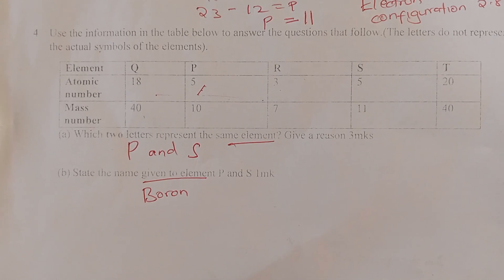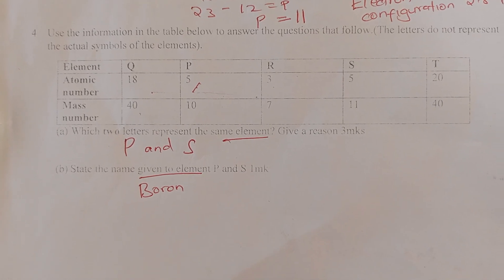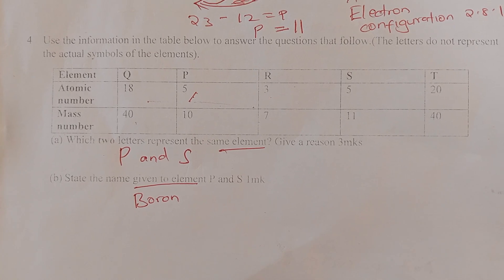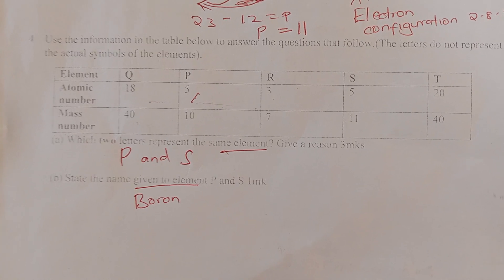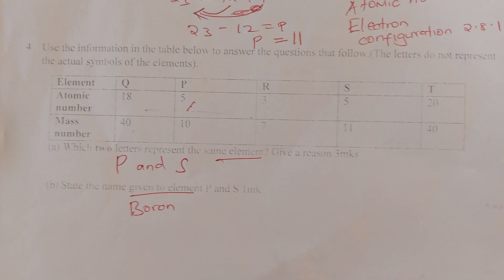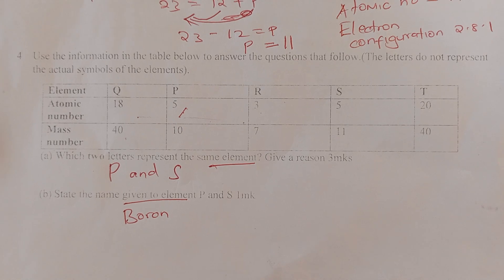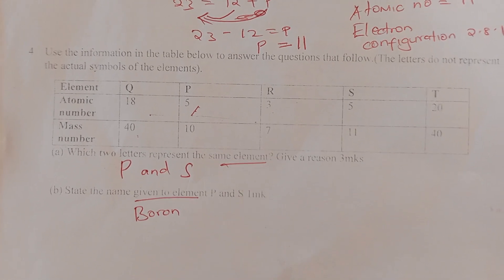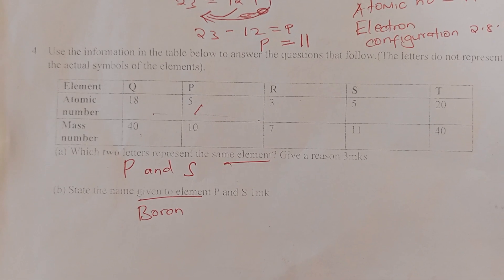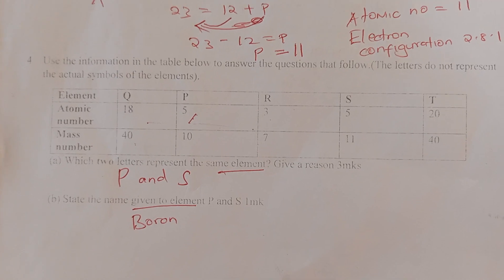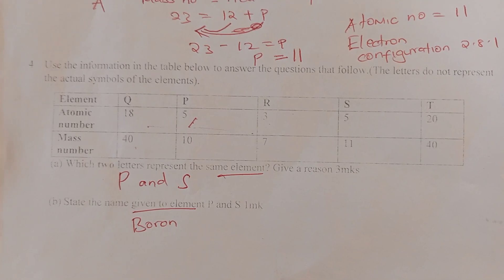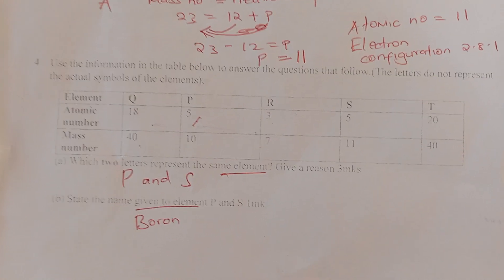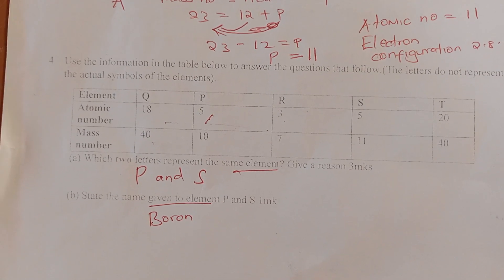Use the information in the table to answer the questions that follow. Given the atomic numbers and mass numbers of elements, each two letters represent the same element. Looking at the atomic numbers, the ones that are the same are P and S. The name given to elements P and S is boron — they are isotopes of boron.